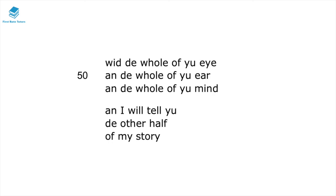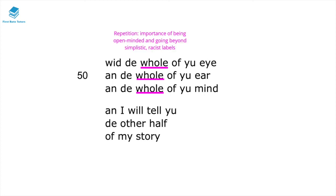With the whole of your eye, the whole of your ear, and the whole of your mind, and I will tell you the other half of my story. In this final part of the poem, he's essentially telling this racist person to come back only if they are willing to have an open mind — only if they're willing to listen with the whole of their eyes, ears, and mind. The repetition of 'whole' shows the importance of being open-minded and going beyond simplistic racist labels.